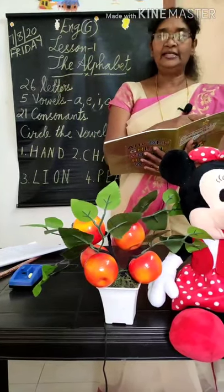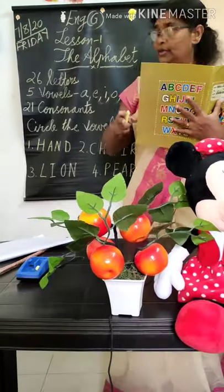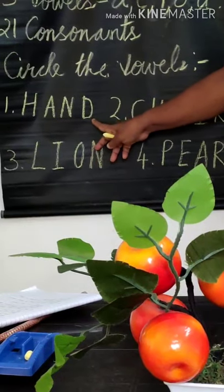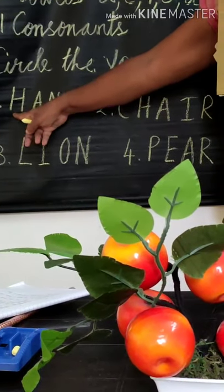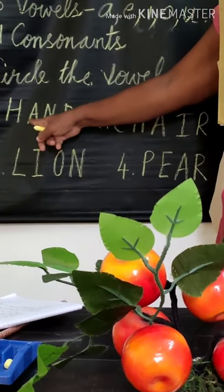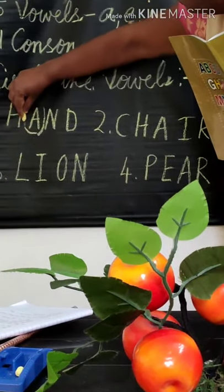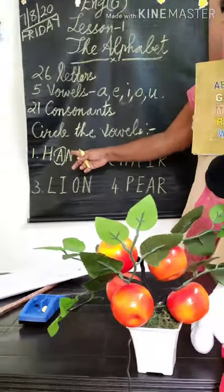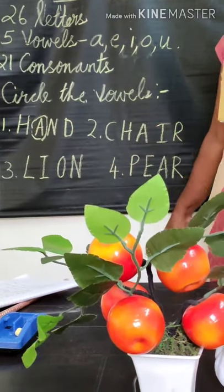First one is HAND. Look at the board — H, A, N, D. Hand. H is a consonant. A is a vowel sound, so you circle A. N is a consonant. D is a consonant.